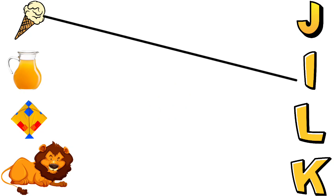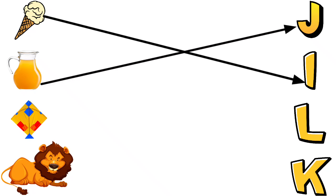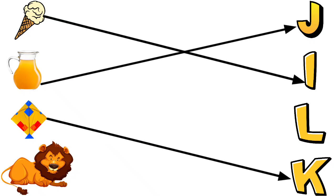I for Ice Cream, J for Jug, K for Kite, L for Lion.